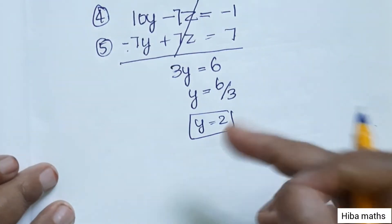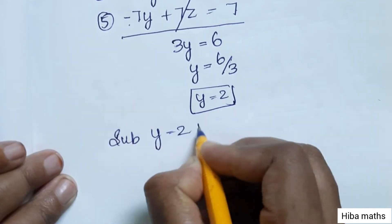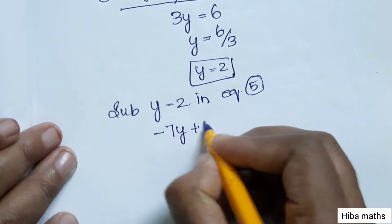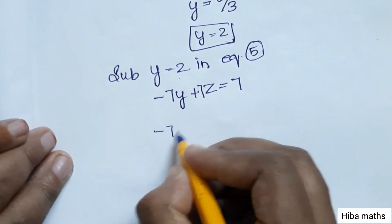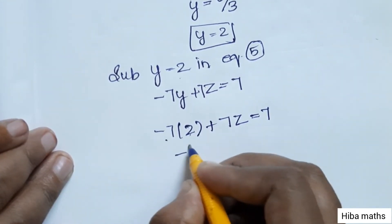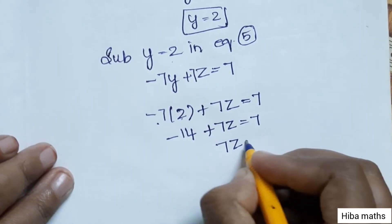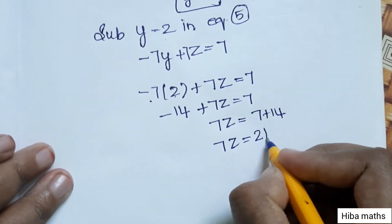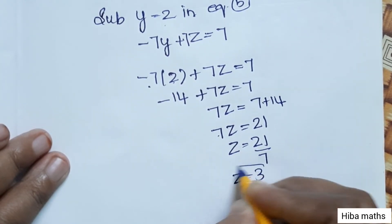Substitute Y = 2 into equation 5: -7 × 2 + 7Z = 7, so -14 + 7Z = 7, giving 7Z = 21, and therefore Z = 3.